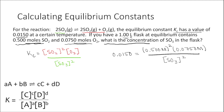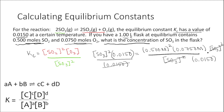We do a little algebraic manipulation: multiply each side by SO3 squared and divide each side by 0.015. This gives us the concentration of SO3 squared at equilibrium equal to 1.25. Taking the square root of each side, the concentration of SO3 at equilibrium is equal to 1.12 M.